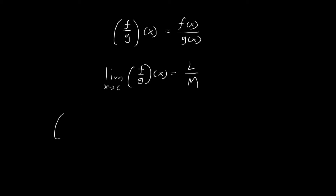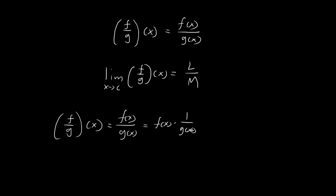I can do this by first noticing that f over g is a function whose outputs are defined as f of x over g of x. You can rearrange this as f of x times 1 over g of x. And 1 over g of x is really just the output of the function 1 over g. So the function f over g is actually composed of the product of two other functions — its outputs are defined as the product of the outputs of two other functions.